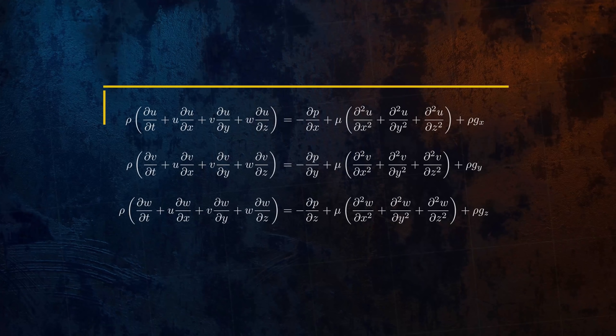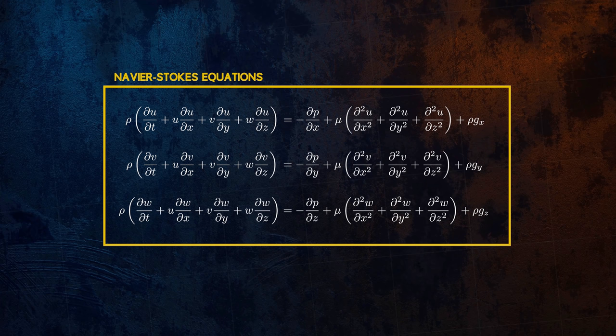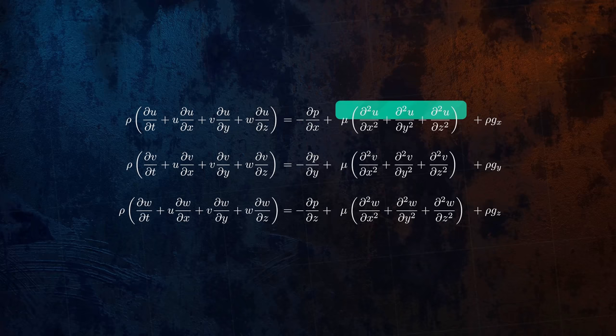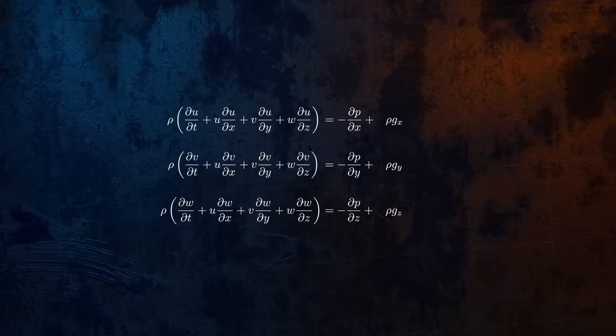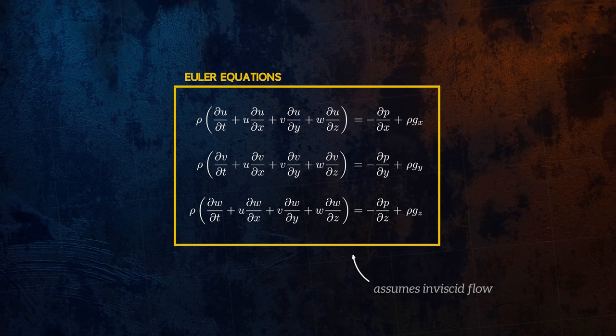The Navier-Stokes equations define the behavior of fluids, but are very difficult to solve. Assuming that flow is inviscid means that we can neglect the viscous terms, which contain the higher order derivatives. The resulting equations for inviscid flow are called the Euler equations, and they're much easier to solve.